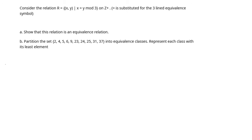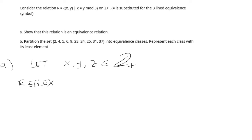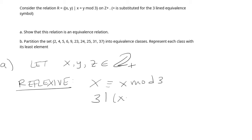For part a, we're going to let x, y, and z be positive integers. We'll start with the three properties. The first one is reflexive. We want to show that x is congruent to x mod 3. If x is congruent to x mod 3, that means 3 divides x minus x, or 3 divides 0. Obviously that's true, so the reflexive property is finished.